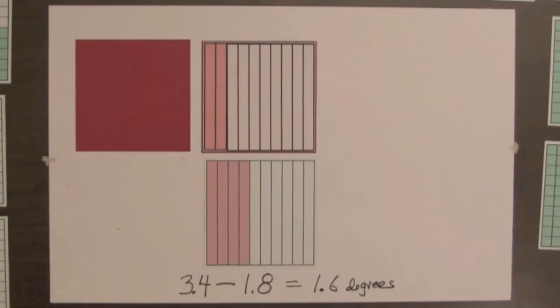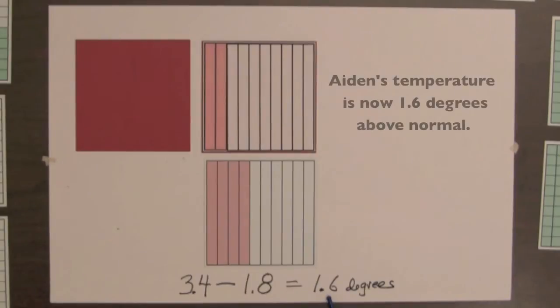After the drop in temperature during the night, Aiden's temperature is now one point six degrees above normal.